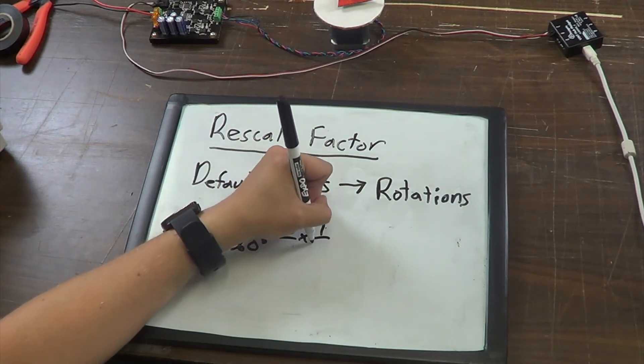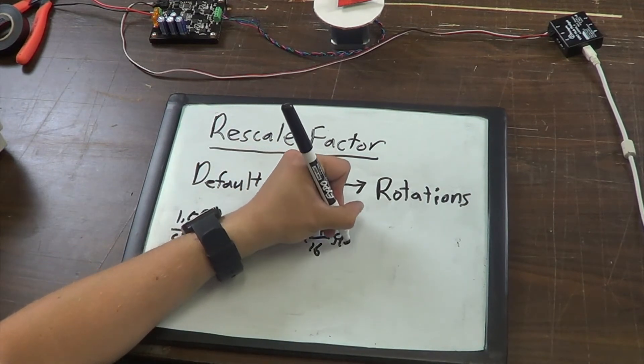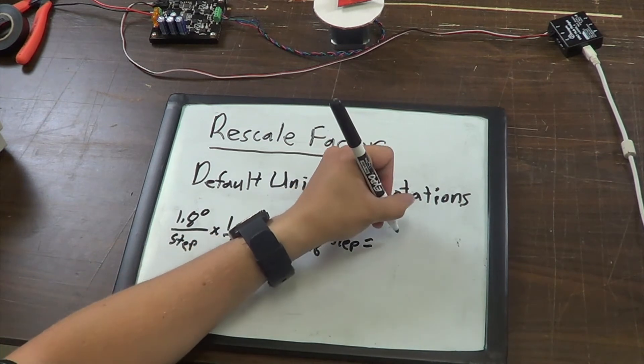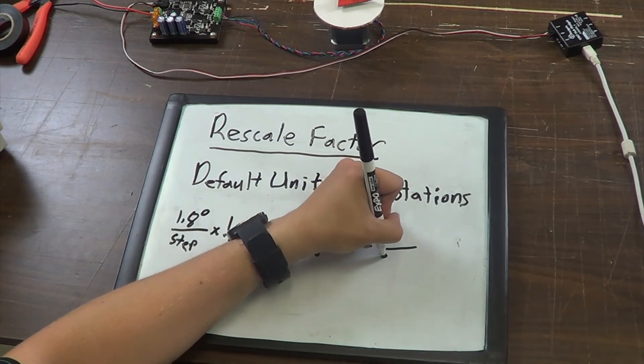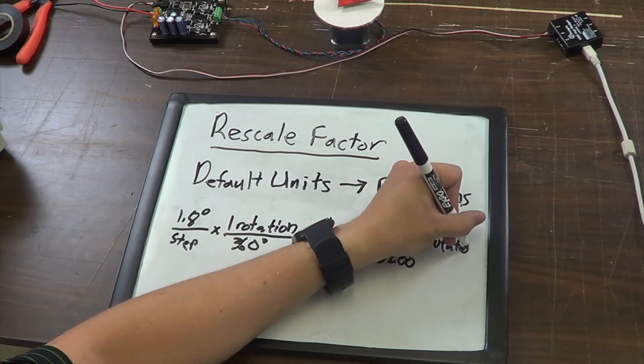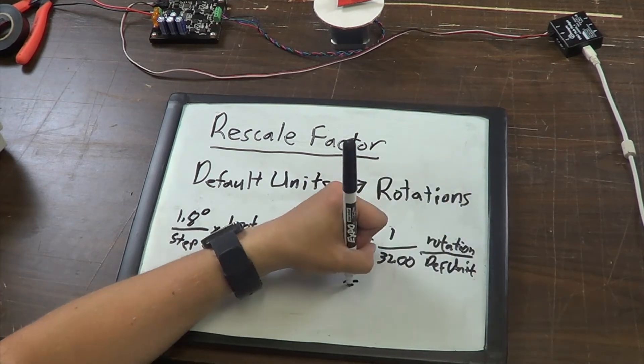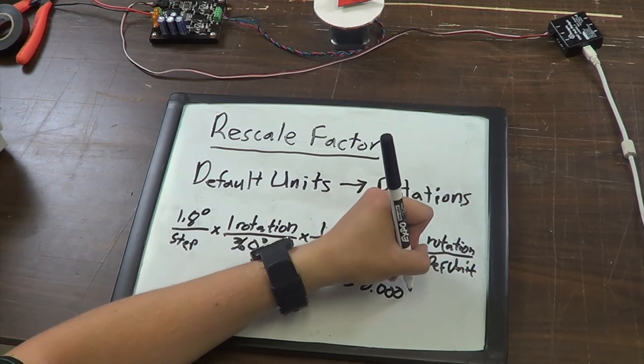multiply it again by our sixteenth step default, you get a rescale factor of 1/3200, or 0.0003125.